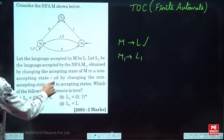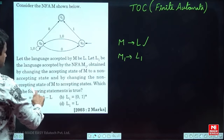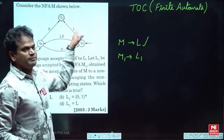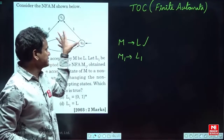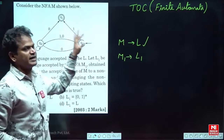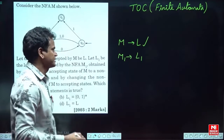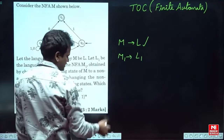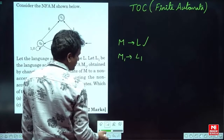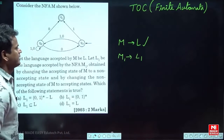Let L1 be the language accepted by NFA M1, obtained by changing the accepting states of M to non-accepting states and changing the non-accepting states into accepting states. In other words, he is interchanging the final and non-final states, and the new automata obtained is called M1.